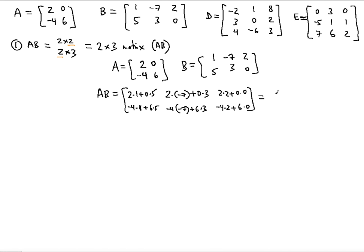Now let's simplify to get whole numbers. 2 plus 0 = 2. Negative 14 plus 0 = negative 14. 4 plus 0 = 4. Negative 4 plus 30 = 26. 28 plus 18 = 46. Negative 8 plus 0 = negative 8. There you go — you just found AB, the product of matrices A and B. It is indeed a 2 by 3 matrix, the same size as matrix B.